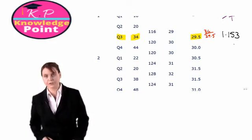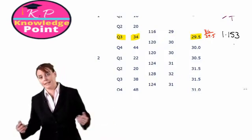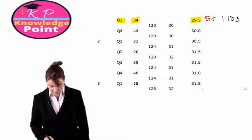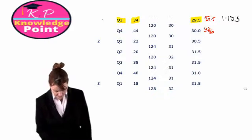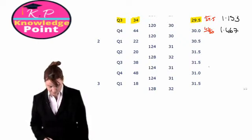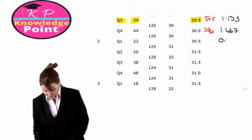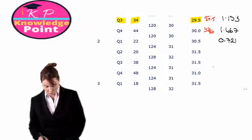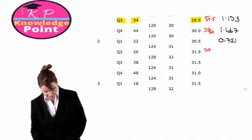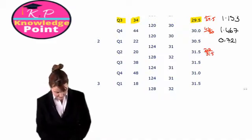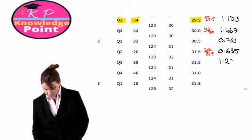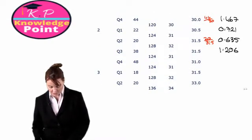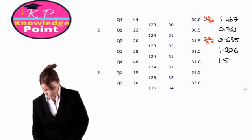You should get 1.153. Have your calculators out — we need to calculate the seasonal variation for all of our remaining quarters. For quarter four of year one, it'll be 44 divided by 30, so we get 1.467. For quarter one of year two, you should get 0.721. For quarter two of year two, we have 20 divided by 31.5, which gives us 0.635. For quarter three of year two, 38 divided by 31.5 gives 1.206. For quarter four, 48 divided by 31 gives 1.548.